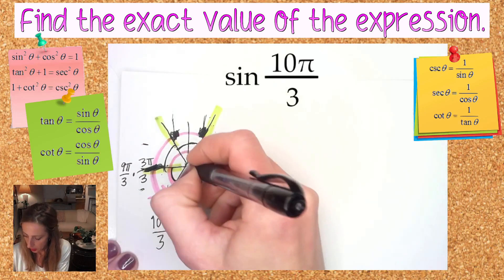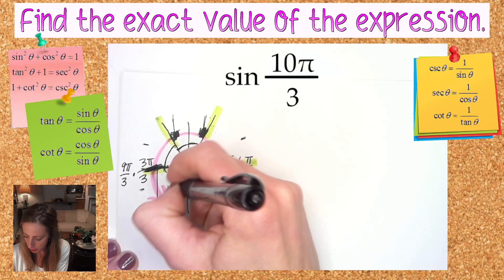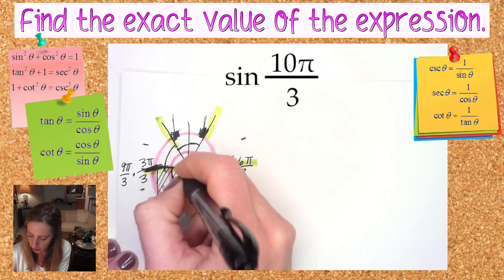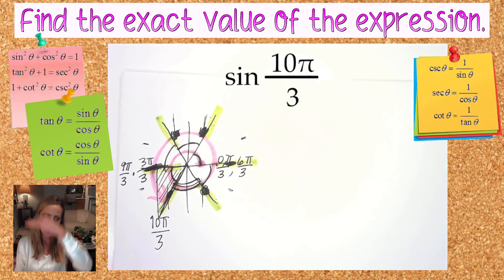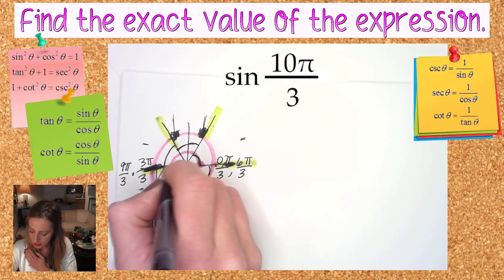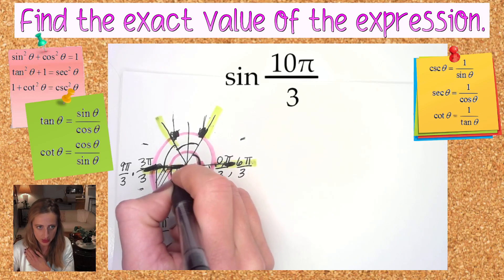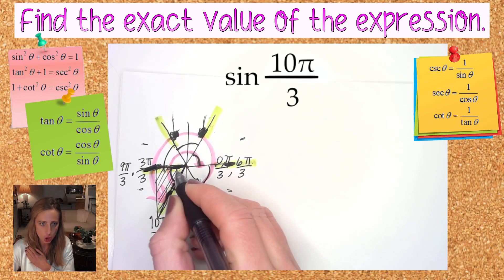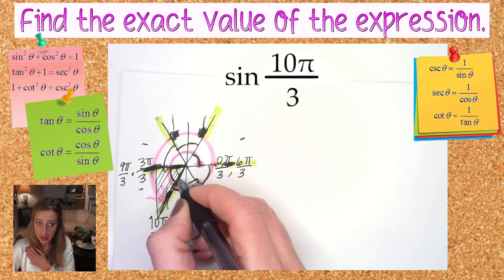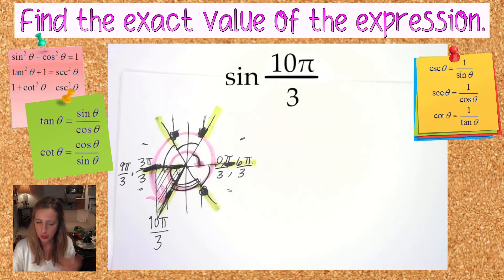Now, next thing. Here I need to think of what we call a reference triangle. Your reference angle is always an acute angle between your terminal side and the closest x-axis. So this over here is my reference angle. If that's 9π over 3 and that's 10π over 3, what is your reference angle? 1π over 3.